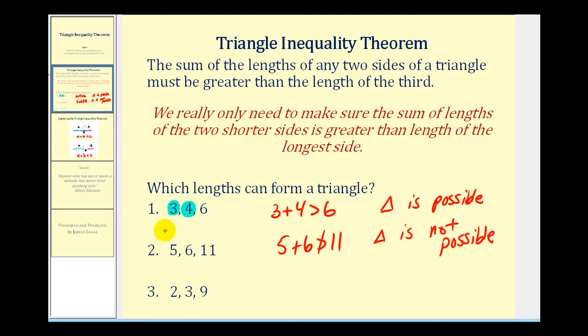And for our last example, the two shorter sides are two and three. Be careful, some textbooks don't always list the two shorter sides first. So, is two plus three greater than nine? Of course, that's not true. So, again, a triangle is not possible.